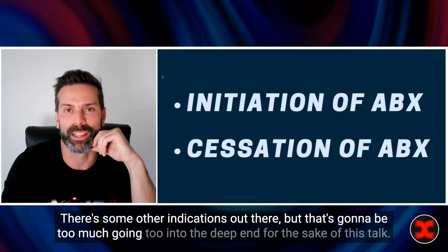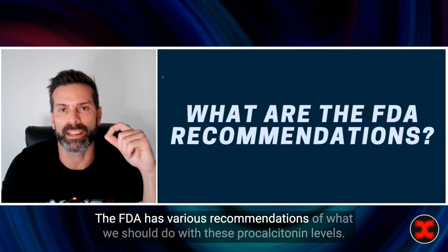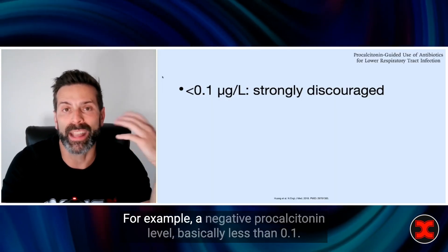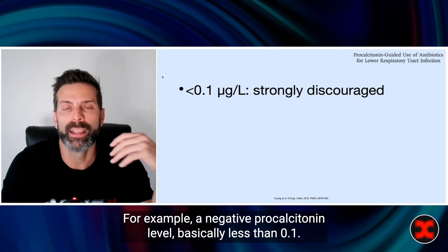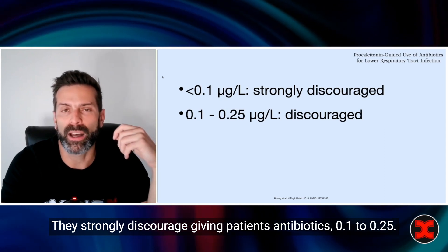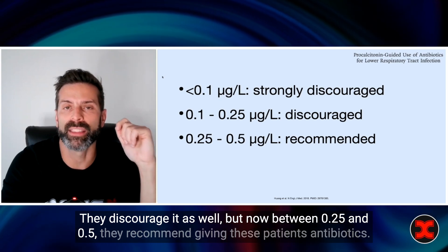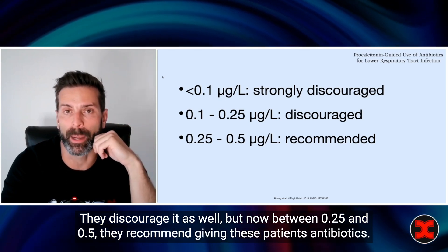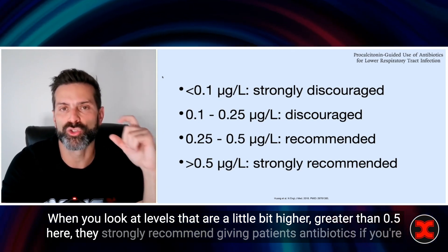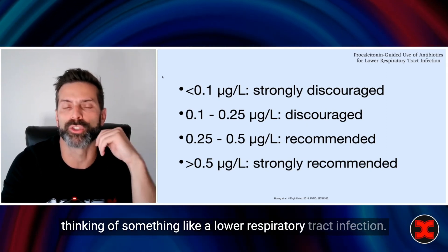There are some other indications out there, but that's going too deep for the sake of this talk. The FDA has various recommendations for what we should do with procalcitonin levels. A negative procalcitonin level — basically less than 0.1 — they strongly discourage giving patients antibiotics. At 0.1 to 0.25, they discourage it as well. But between 0.25 and 0.5, they recommend giving antibiotics. At levels greater than 0.5, they strongly recommend antibiotics if you're thinking of something like a lower respiratory tract infection.